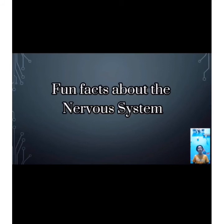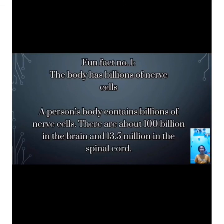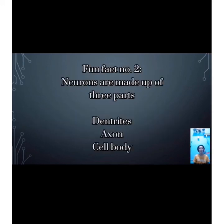Fun fact number one: The body has billions of nerve cells. Every person's body contains billions of neurons — about 100 billion in the brain and 13.5 million in the spinal cord. Neurons take up and send out electric and chemical signals. Fun fact number two: Neurons are made of three parts. Neurons receive signals through short antenna-like dendrites and send signals out through a long cable-like axon, which can be up to a meter long. In some neurons, axons are covered with a thin layer of fat called myelin, which acts as an insulator and helps transmit nerve signals. The main part of a neuron is the cell body, which contains all the important parts that allow it to function.